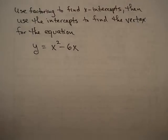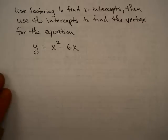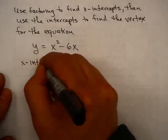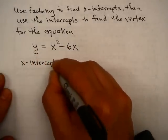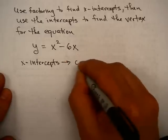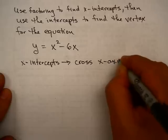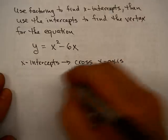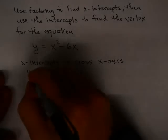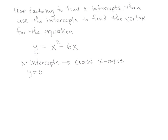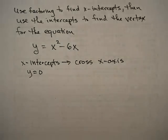Let's take a look at this problem using factoring to find the x-intercepts, then use the intercepts to find the vertex for the equation. Remember, the x-intercepts are where the function crosses the x-axis. When you cross the x-axis, you have a point where y equals 0. So we're going to use that fact to help us solve this.